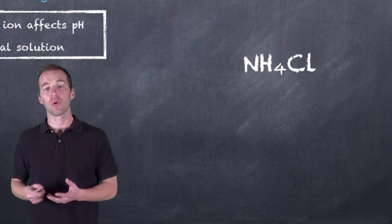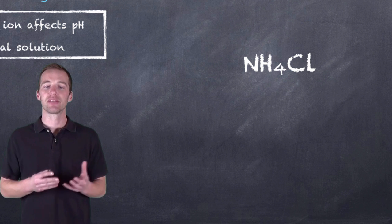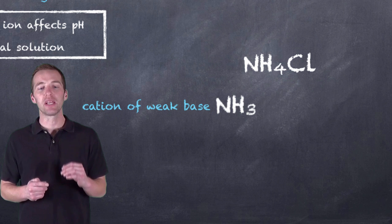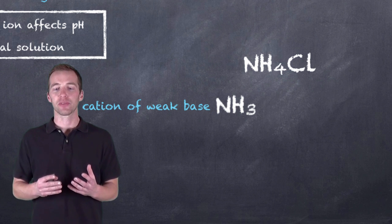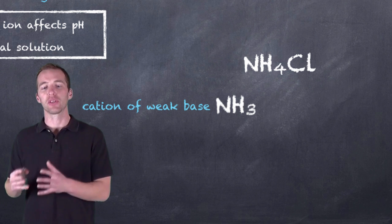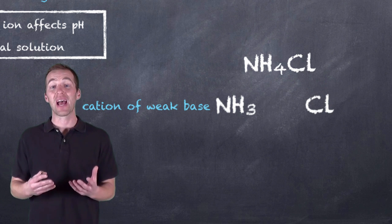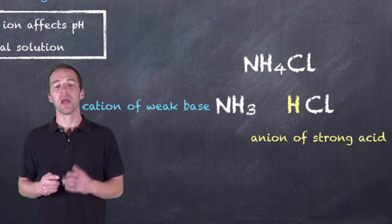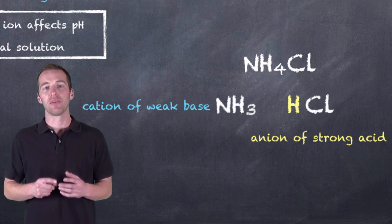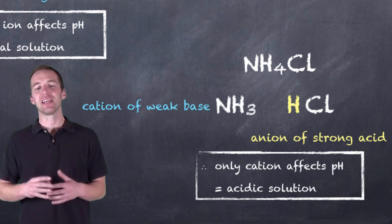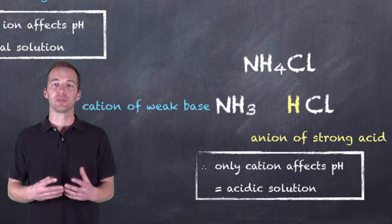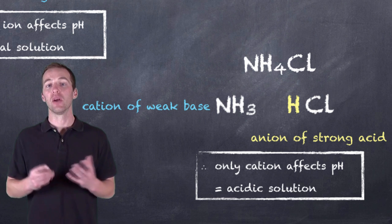Let's take a look at the salt ammonium chloride. Taking it apart, we can see that the ammonium ion comes from ammonia, which is a relatively common weak base. Its conjugate is going to be a weak acid, but it is stronger than water. If we take a look at the chloride ion, we know it is the conjugate of a strong acid, so it's not going to have any effect on the pH of our solution. But because the ammonium ion is the conjugate of a weak base, it will have an impact on our solution. Only the cation affects the pH, and because it's the conjugate of a weak base, it's going to form an acidic solution — it acts as an acid, more acidic than water would be without that ion.